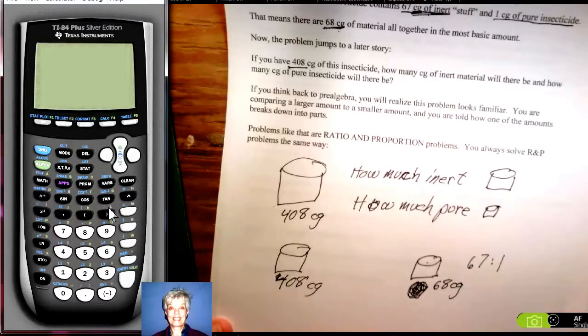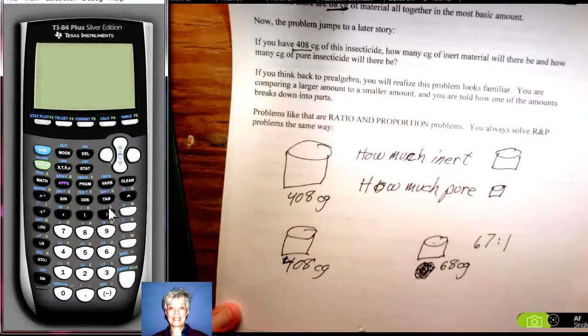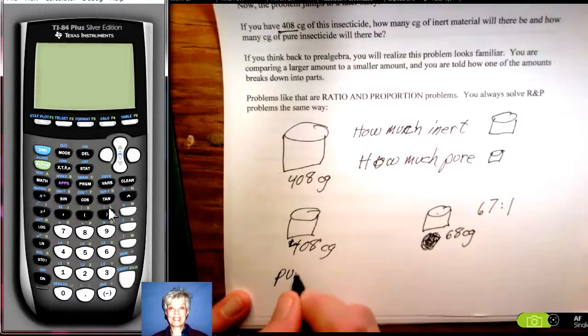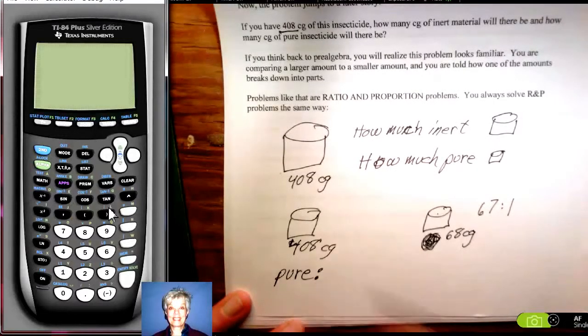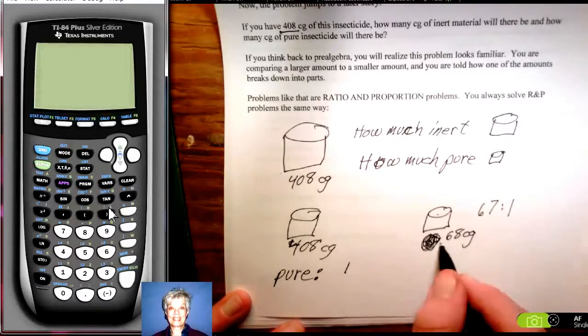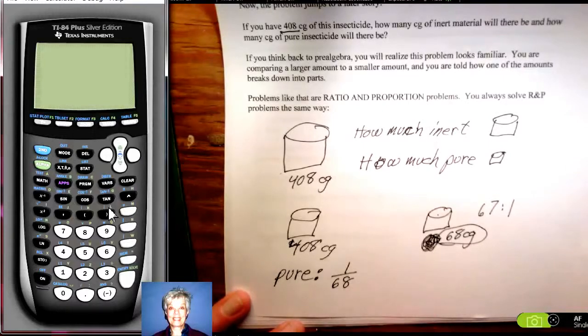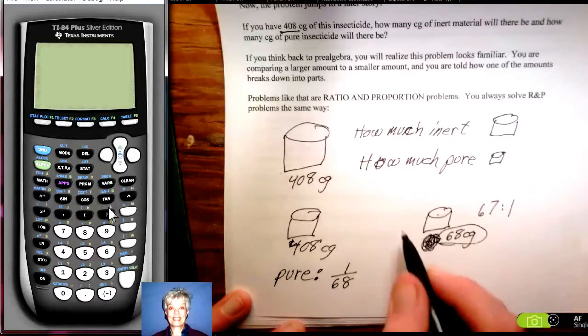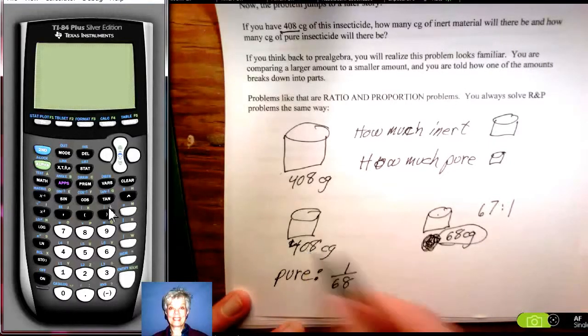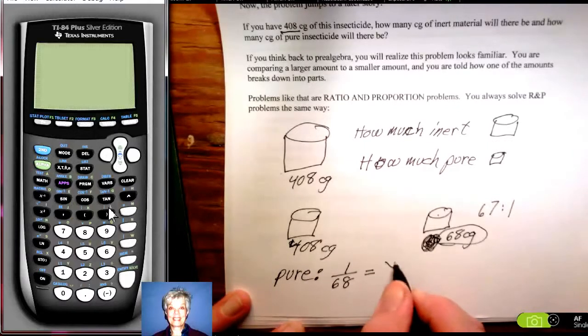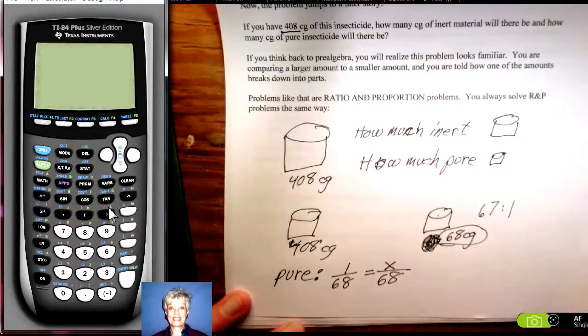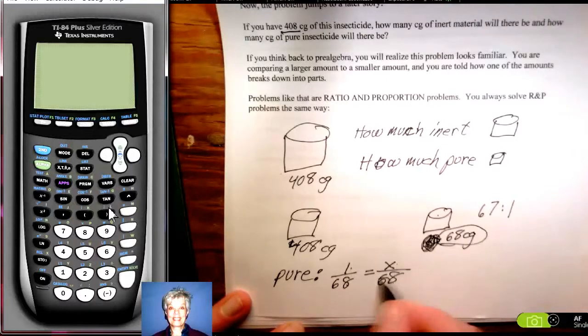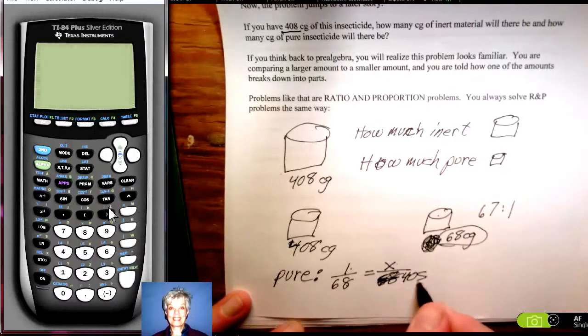It might be easier to find the pure stuff first. I know that one centigram out of the total 68 centigrams is pure ingredient over here. How much of the 408 centigrams is pure? So, I set this up the same way. One pure to 68 total equals x pure to 408 total.